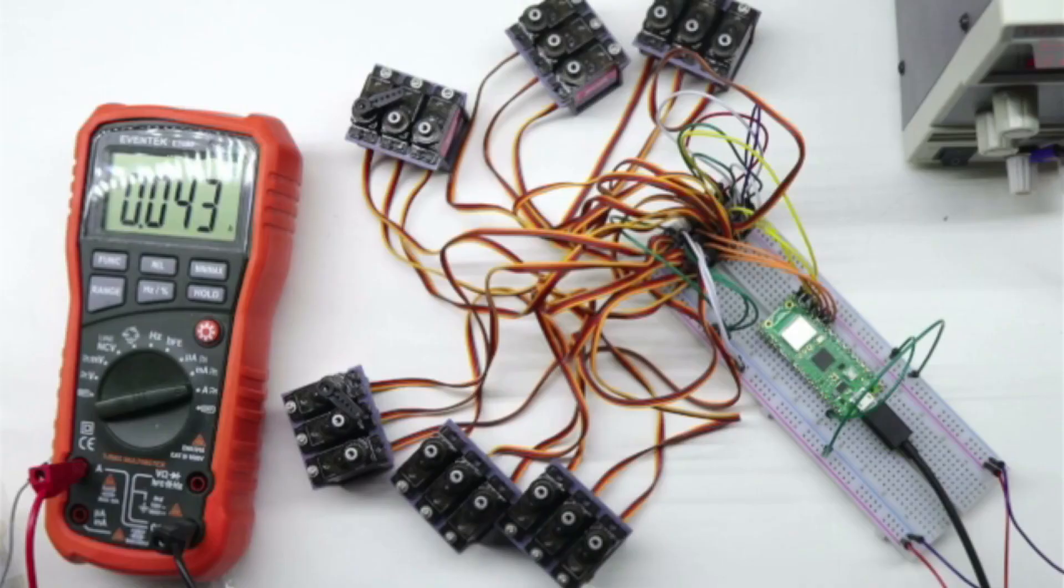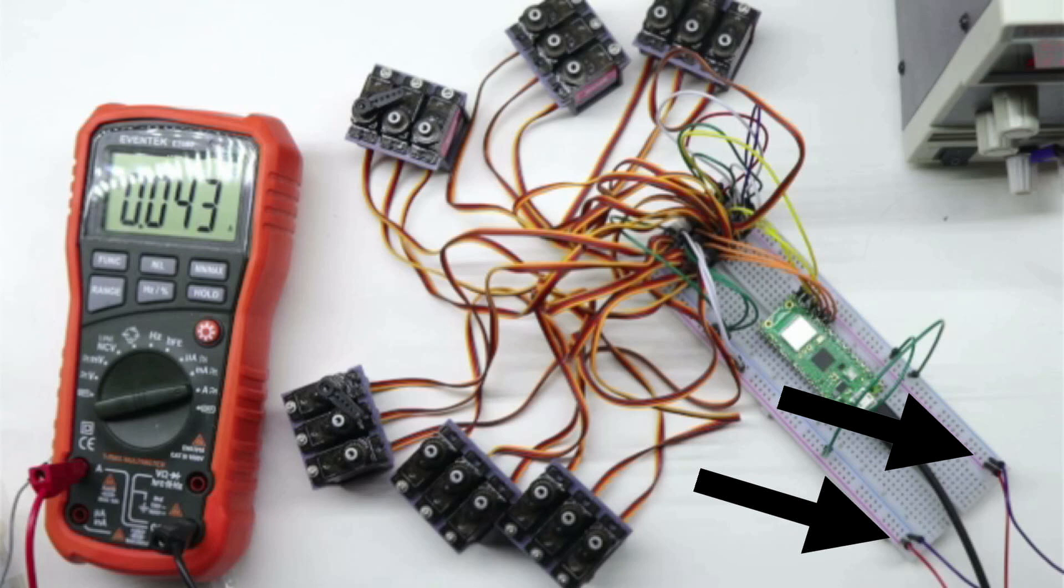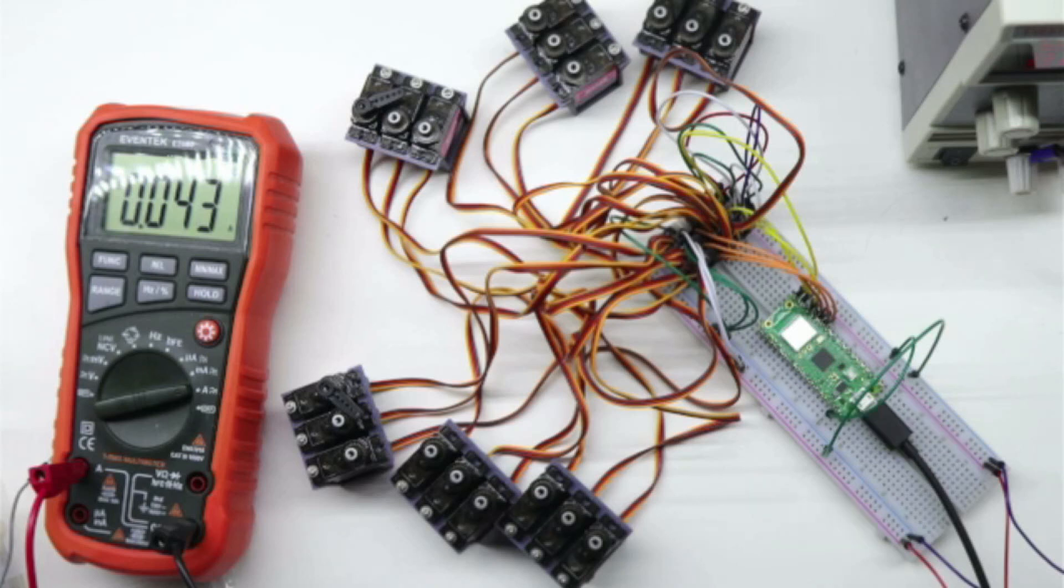I think this might be an issue with resistance. I don't think these breadboards were designed to deliver power as much as convey a signal. I ended up doubling up the input wires from the power supply to reduce resistance and see if that helps. It looks like the servos are fully powered now, and the multimeter maxes out around 2.6 amps.